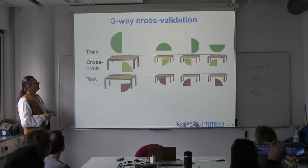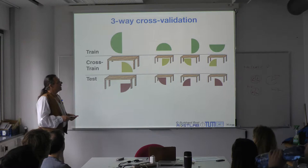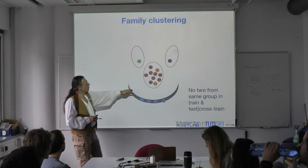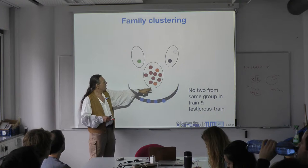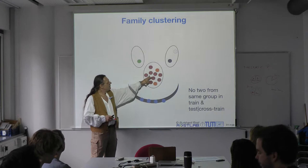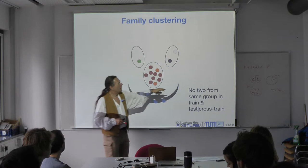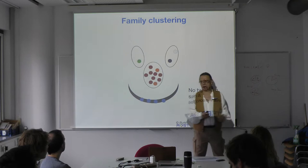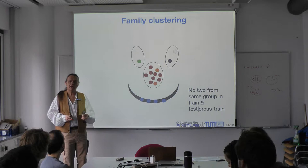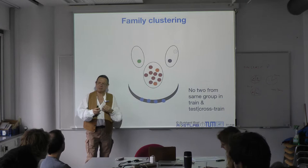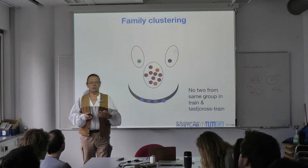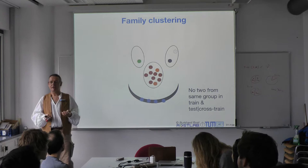The optimization on the cross-training set is part of training, part of optimization, part of development — trying to get the best possible method. That's why I call it cross-training. In the literature you'll find this sometimes called 'validation' and the final set called 'testing,' and sometimes they swap — that confusion doesn't exist with the term cross-training. You need at least these three datasets, and you need to make sure you have entities that are not redundant.